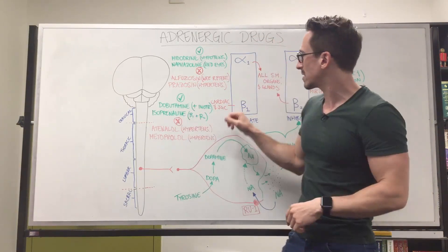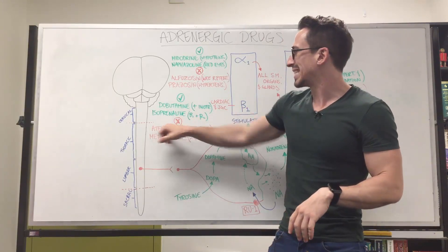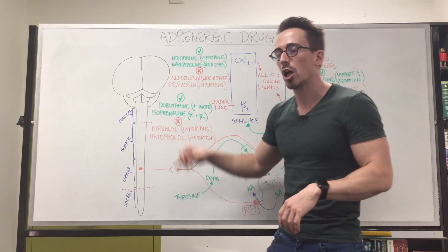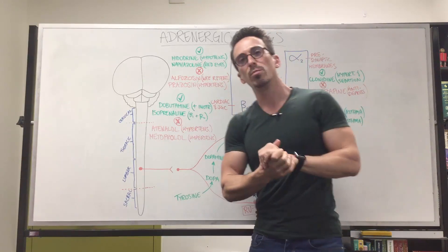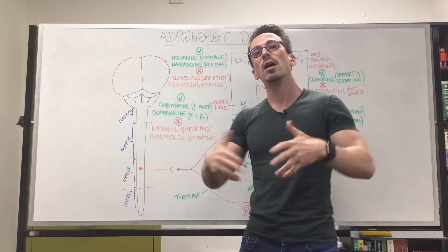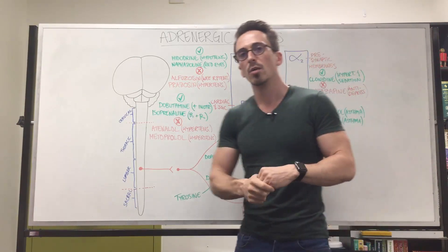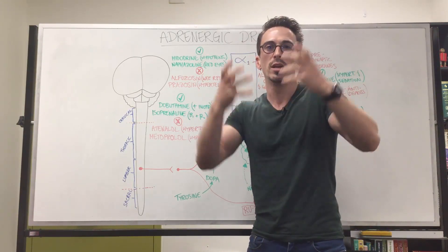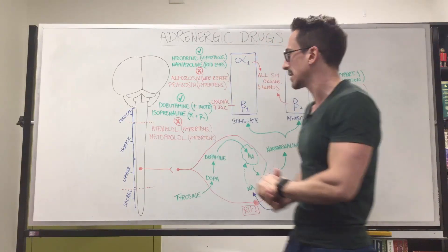We've also got antagonists of beta-1. So these are blockers, beta-1 blockers such as atenolol and metoprolol. These are the lulls. So beta blockers are the lulls. Why would we want to block beta-1 specifically? Because if we block beta-1, we're going to calm the heart down. We're going to slow it down. So it can be used to treat hypertension predominantly. Also can be used to treat anxiety. This may be because of some of the central effects that it has.